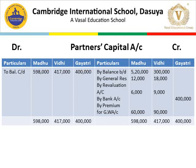Now we prepare the partners' capital account. Starting from the credit side, we look at the liabilities side of the balance sheet. By balance brought down: Madhu's capital Rs. 5,20,000, Vidhi's capital Rs. 3,00,000. The general reserve of Rs. 30,000 is distributed between old partners in old profit sharing ratio of 2:3, giving Madhu Rs. 12,000 and Vidhi Rs. 18,000.